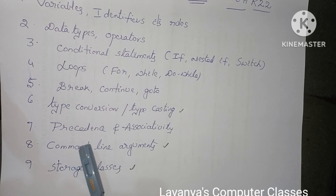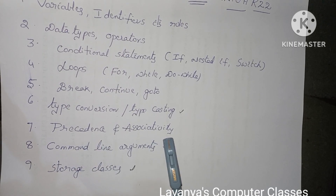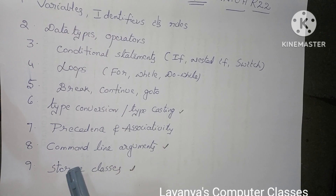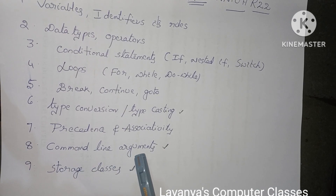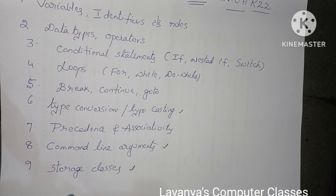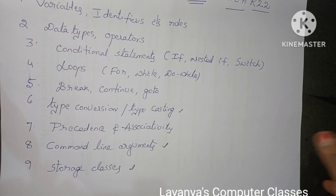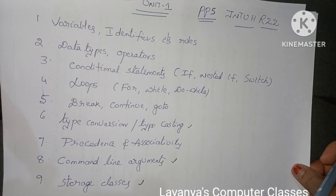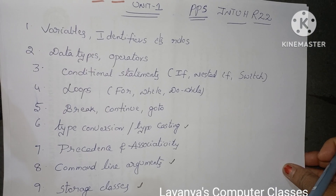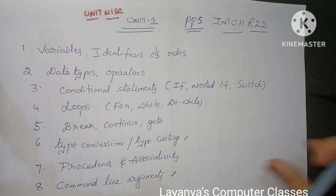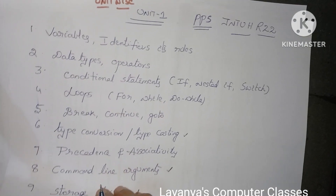Next question: what is precedence and associativity in expression evaluation? Also explain about command line arguments — a very important question — and explain about storage classes. These are all the very important questions in Unit 1.